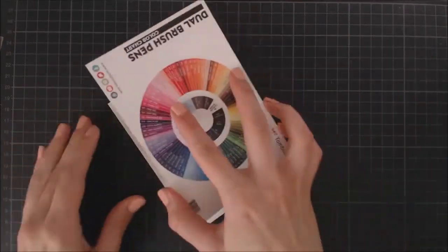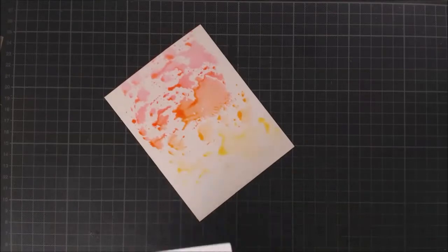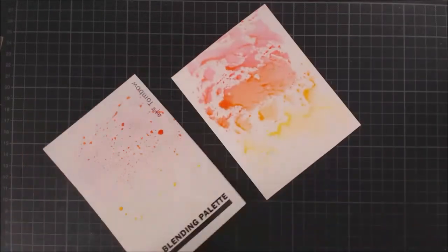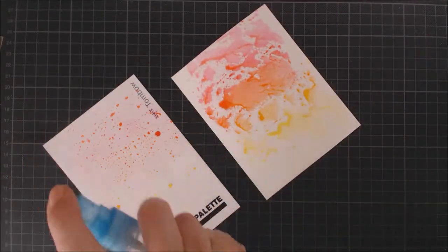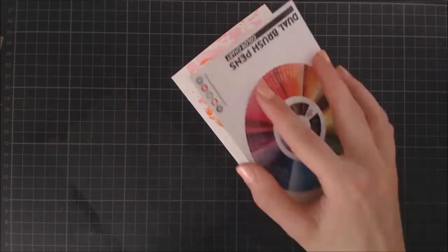To get a smoother result, I'm going to spray the blending palette with water using a spray bottle and smoosh it again onto my paper.